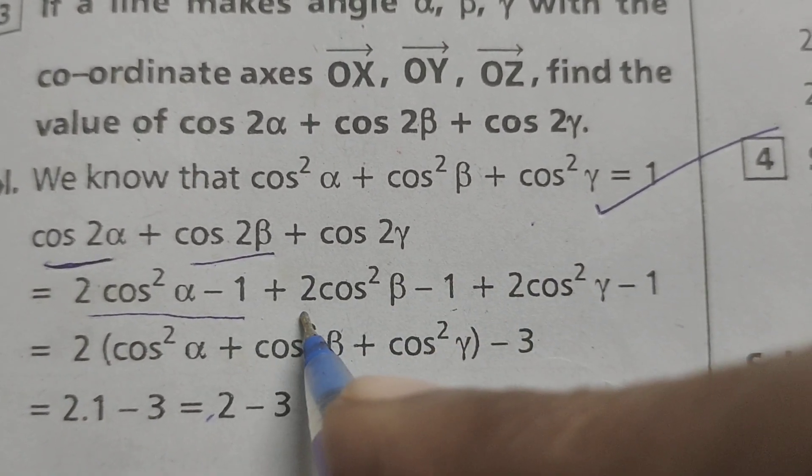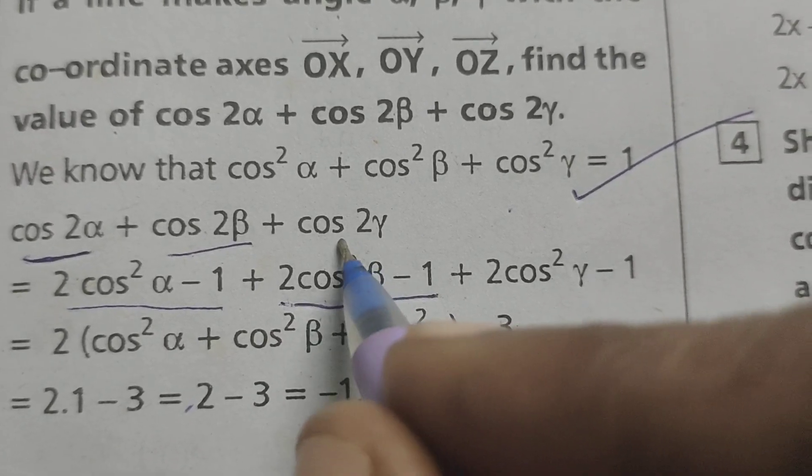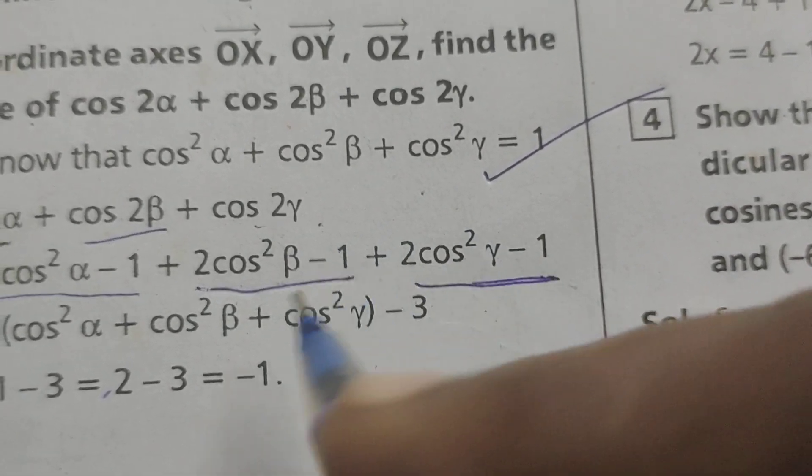Cos2β means 2cos²β minus 1. Cos2γ, 2cos²γ minus 1.